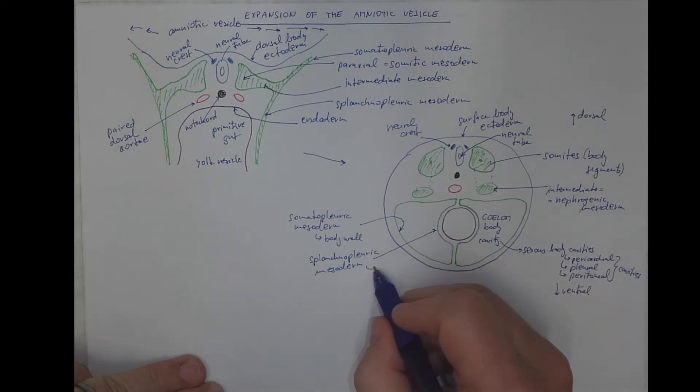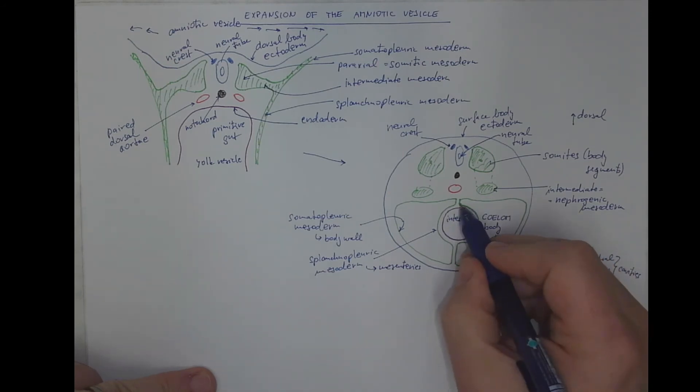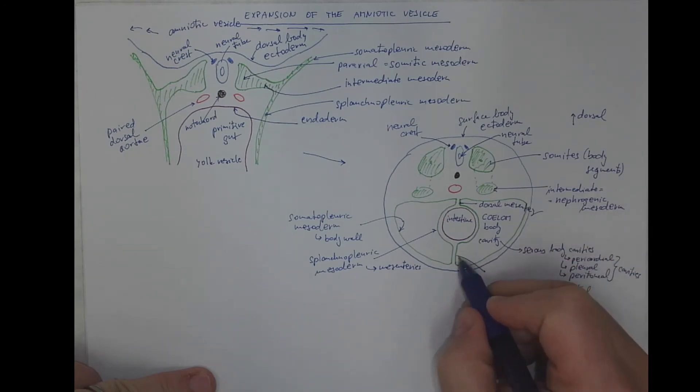It will form the mesenteries and also the mesodermal derived components of the intestinal wall. This is the intestine and this is the dorsal mesentery. The mesentery and the ventral mesentery.